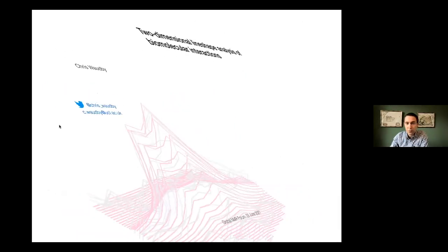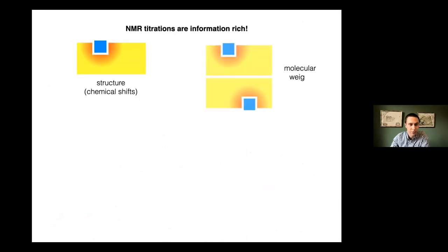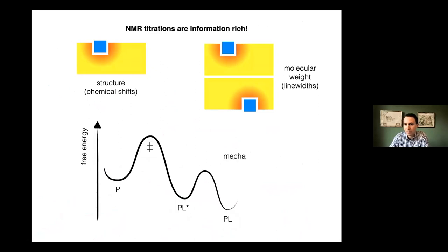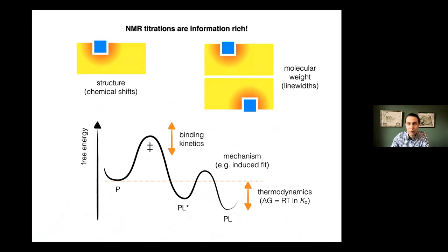The first point I want to impress on you is that NMR titrations are very information-rich. You get a lot of detail from them — not just on structure of interactions through chemical shifts, but also in molecular weight changes through line widths, thermodynamics through the KD from titration measurements, kinetics through barrier heights in fast or slow exchange, and also on the mechanism — NMR resonance behavior across titrations is sensitive to the particular mechanisms of interaction.